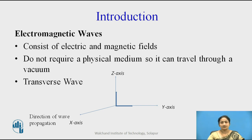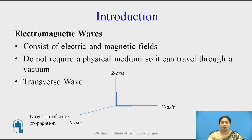Before starting with the derivation, let us see what is exactly an electromagnetic wave. An electromagnetic wave consists of the electric field and the magnetic field. They do not require any media, so they can travel through the vacuum. They are also called as a transverse wave, because the electric field and the magnetic field are perpendicular to each other, as well as they are perpendicular to the direction of propagation.